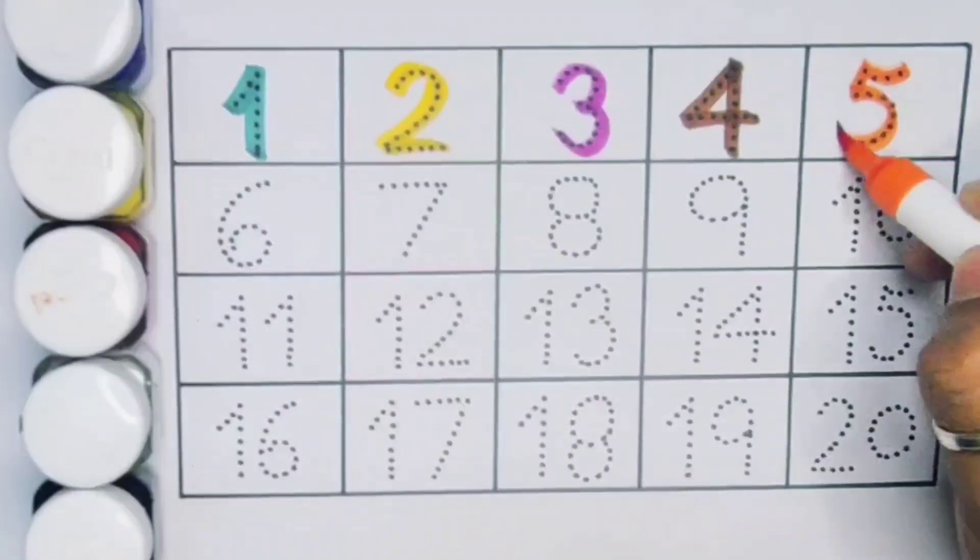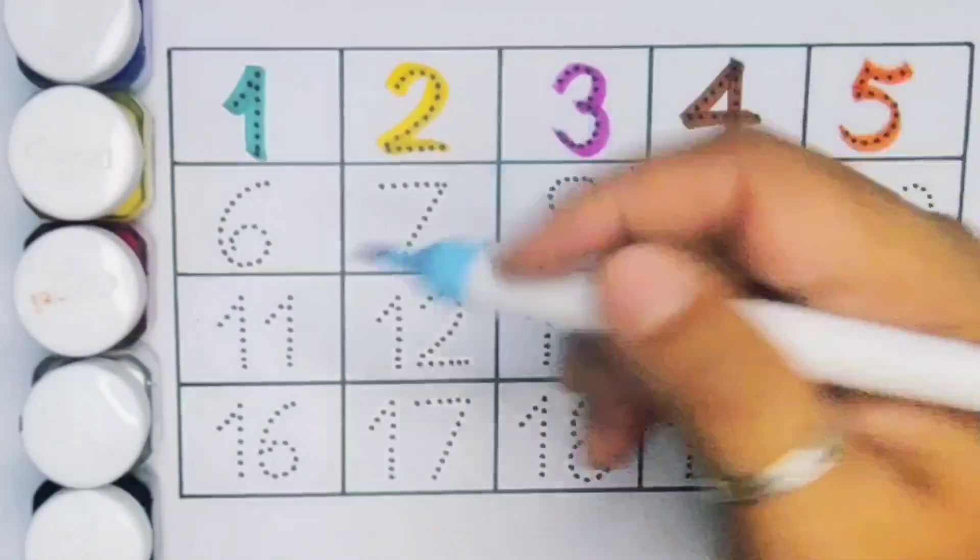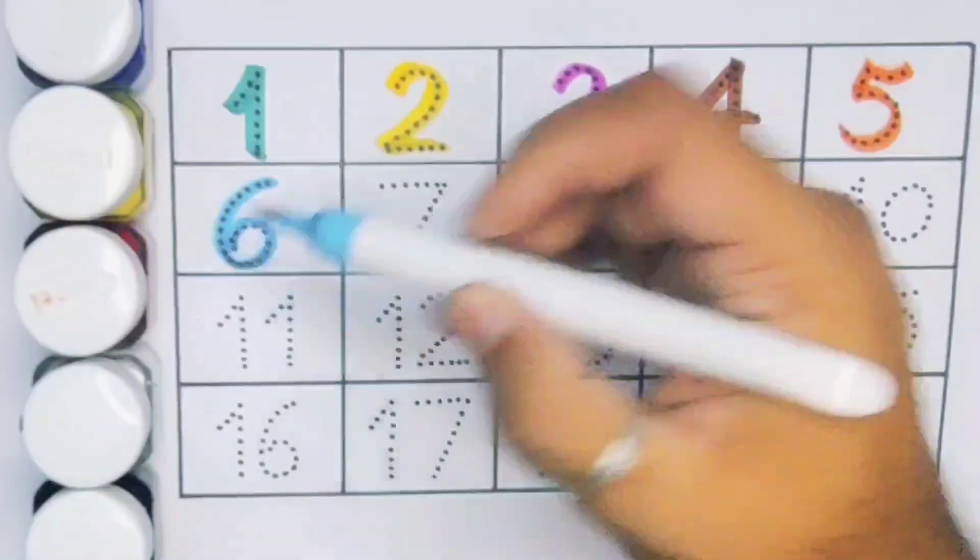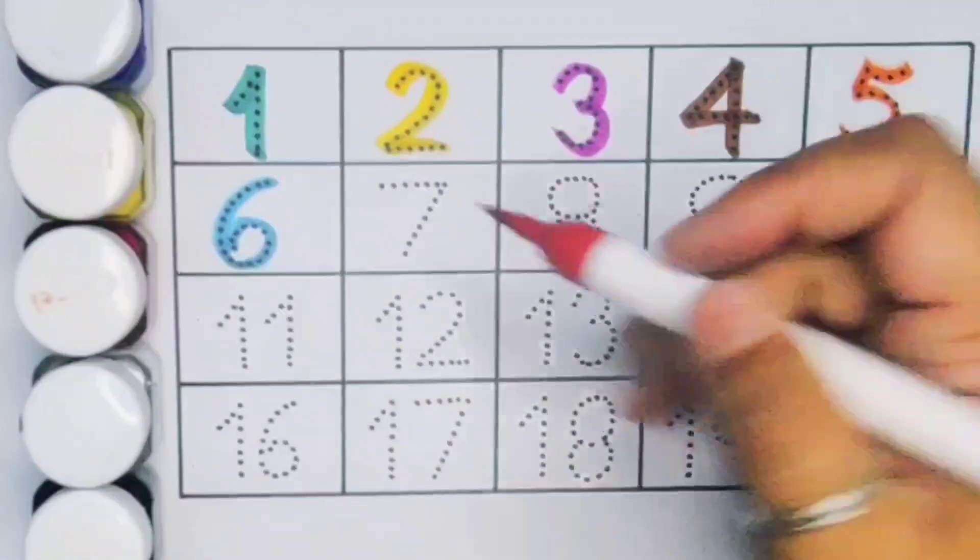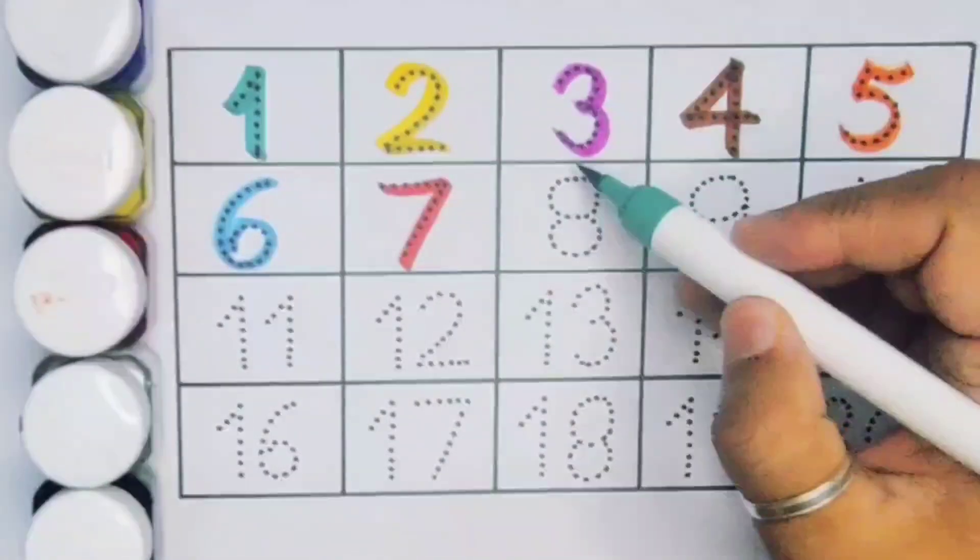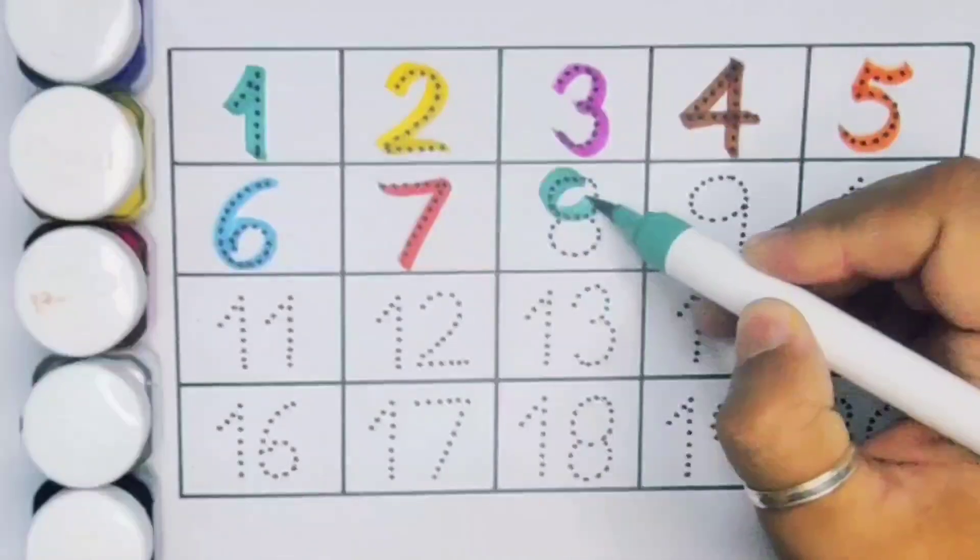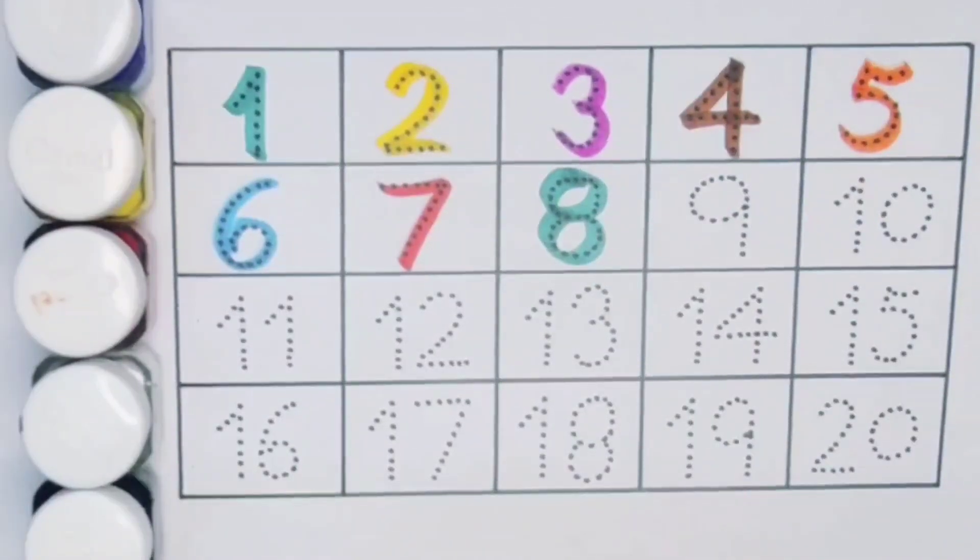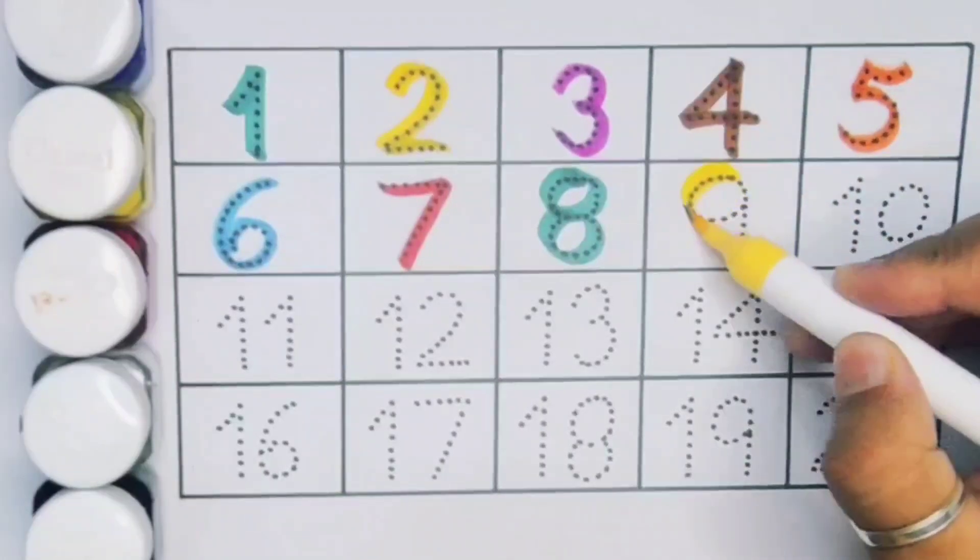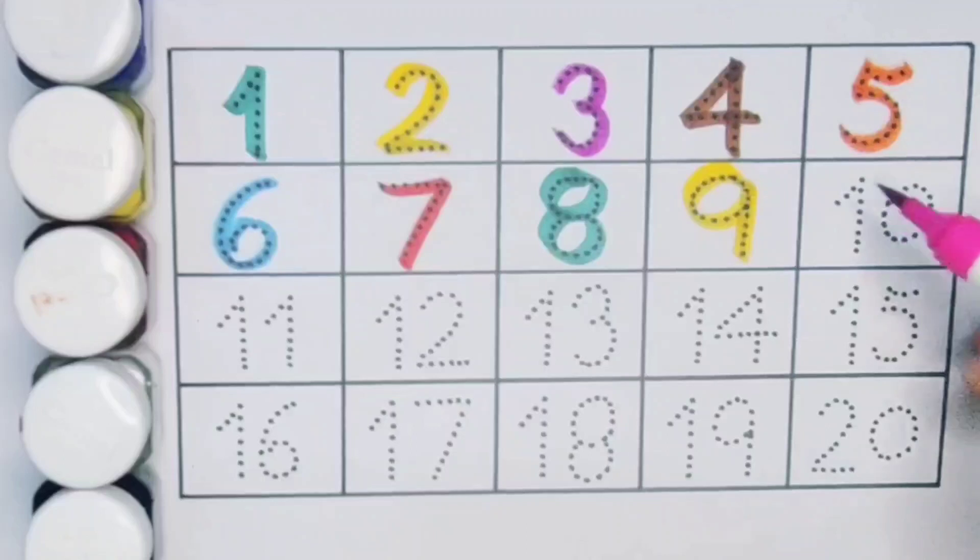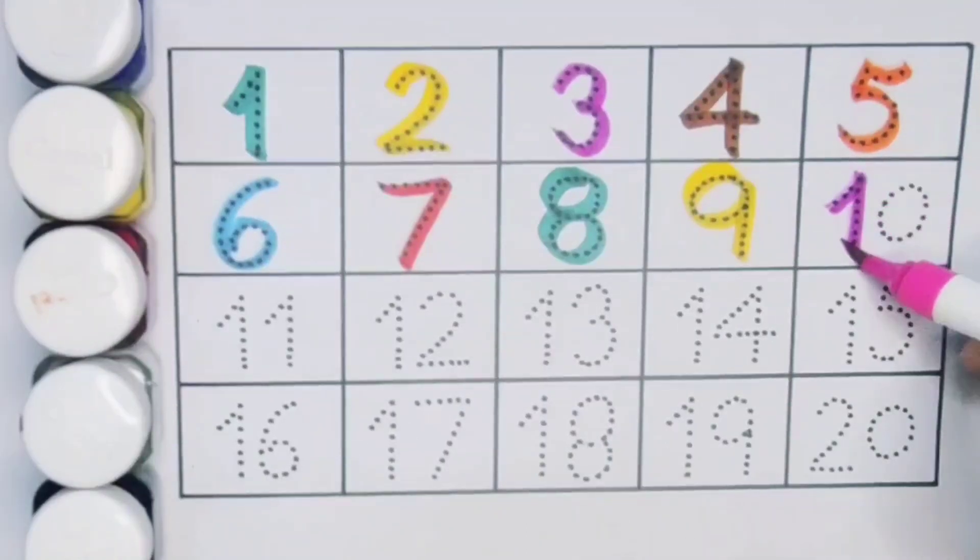Next kids 6, number 6. Next kids 7, number 7. Next kids 8, number 8. Next kids 9, number 9. Next kids 10, 1, 0, 10, number 10.